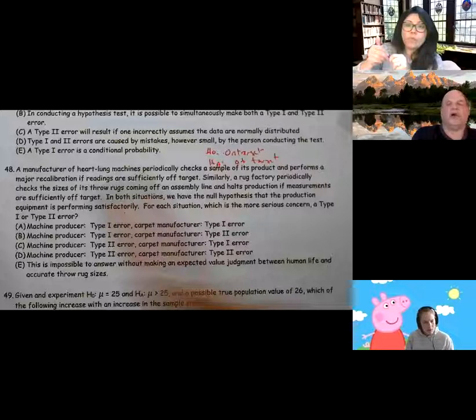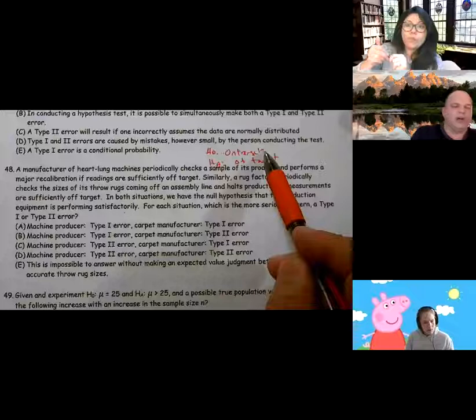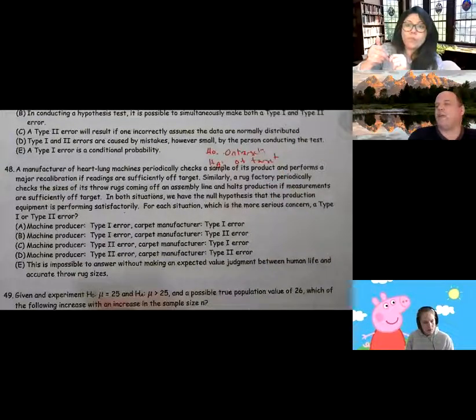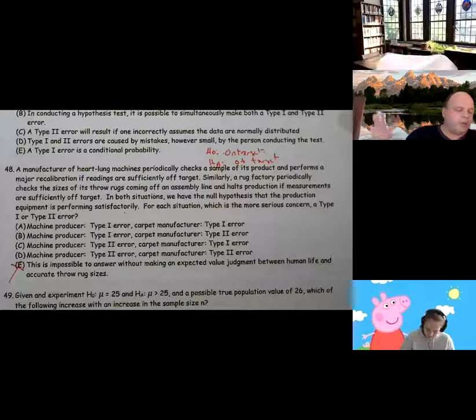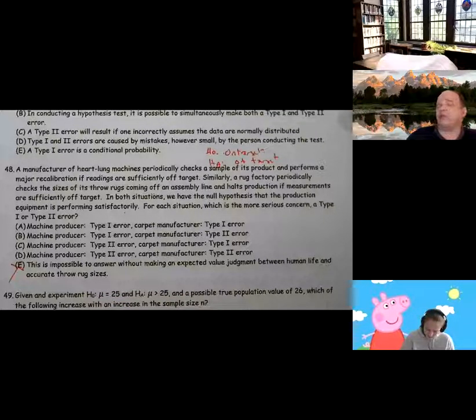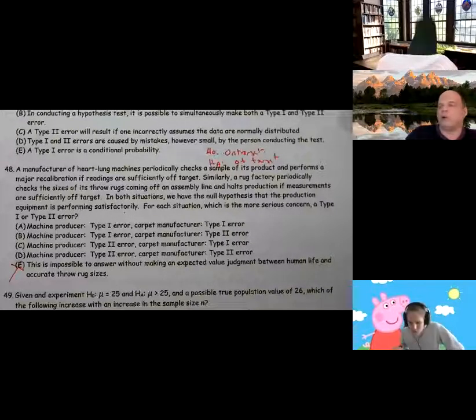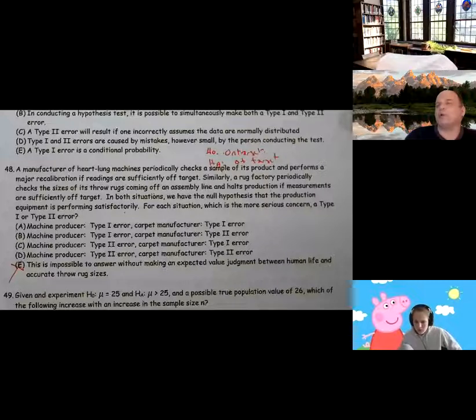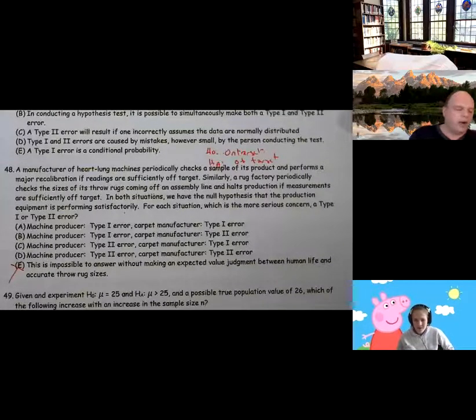For each situation which is a more serious concern, a Type 1 or Type 2 error. Truthfully, I'm going to ignore that because this is a, I mean, basically you are making value judgments. So when we actually do this, I'm going to skip number 48 because you really can't make a value judgment, although I would argue human life is much more important than throw rugs. But for this particular instance, I'm going to skip that.